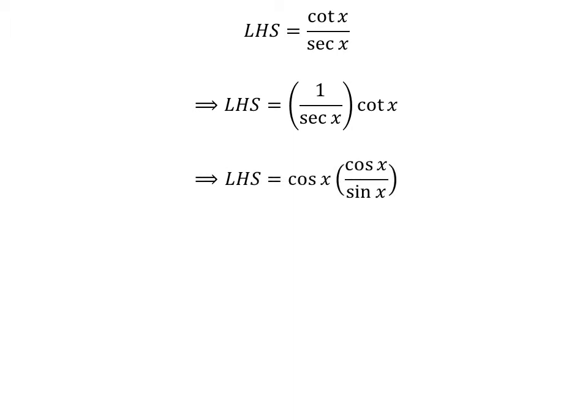We know cosine of x is equal to 1 upon secant of x and cotangent of x is equal to cosine of x upon sin of x, so left hand side of the identity is equal to cosine of x times cosine of x upon sin of x. Straight multiplication gives us left hand side of the identity is equal to square of cosine of x upon sin of x.